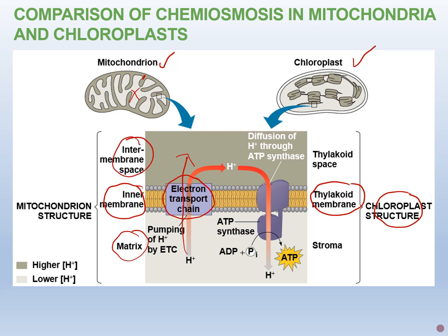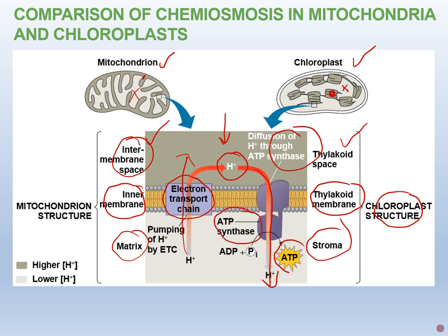In chloroplasts, protons are pumped from the stroma into the thylakoid lumen. That generates a high concentration of protons in the intermembrane space or the thylakoid lumen, and these protons want to come back out, going down their concentration gradient. When they're allowed to do so through ATP synthase, that generates ATP through chemiosmosis.